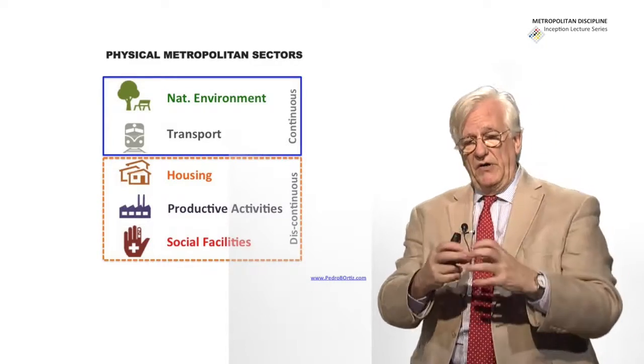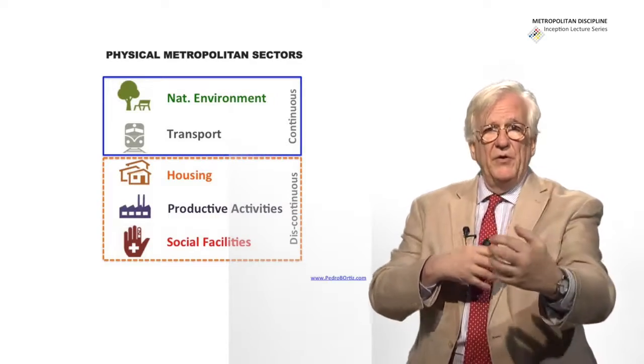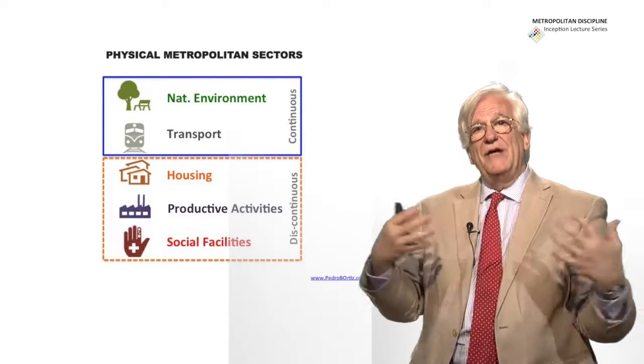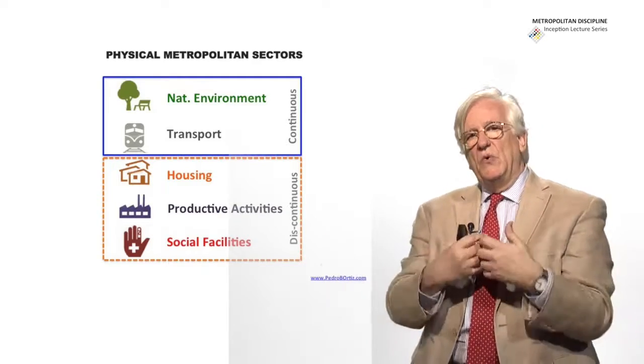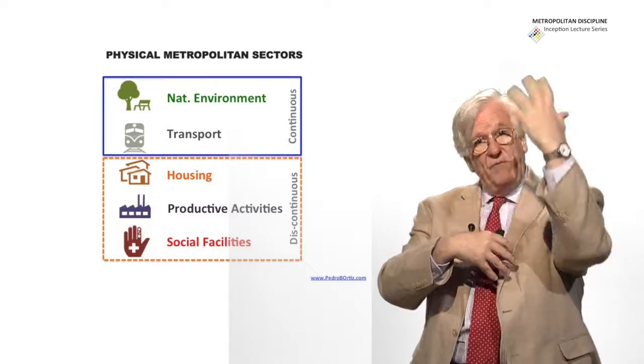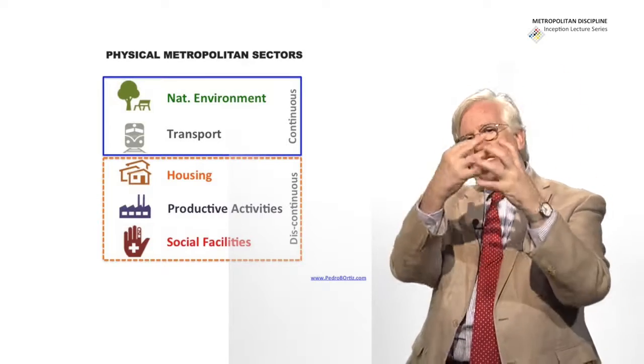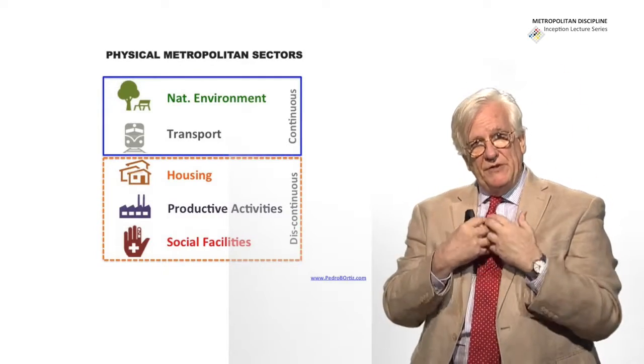The environment as well. You cannot have a park separated from another park. You must have biodiversity and the flow of that biodiversity requires that the parks, the system from national parks to urban parks, have to be as continuous as possible.